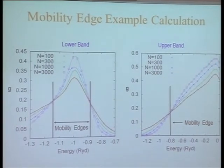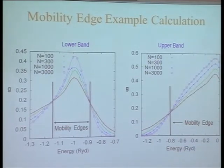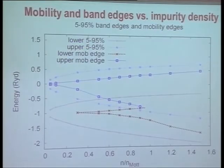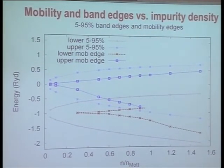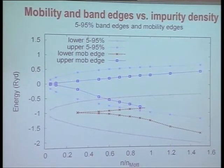This shows that the lower Hubbard band has two mobility edges, and so does the upper Hubbard band. So you locate the mobility edges as a result of this calculation. Now we can show the bands — energy versus density — on a linear plot. The 5% and 95% points are plotted for both bands, and these are the mobility edges within the two bands.